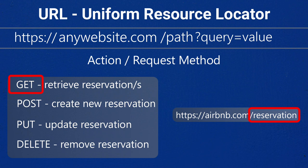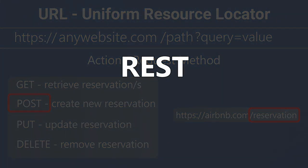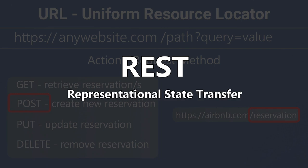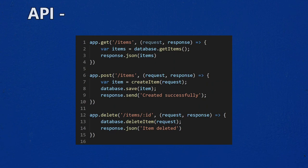That action and path — GET reservation, POST reservation — are naming conventions called REST, which stands for Representational State Transfer. The whole list of action types that are allowed on a server is called an API, which stands for Application Programming Interface.